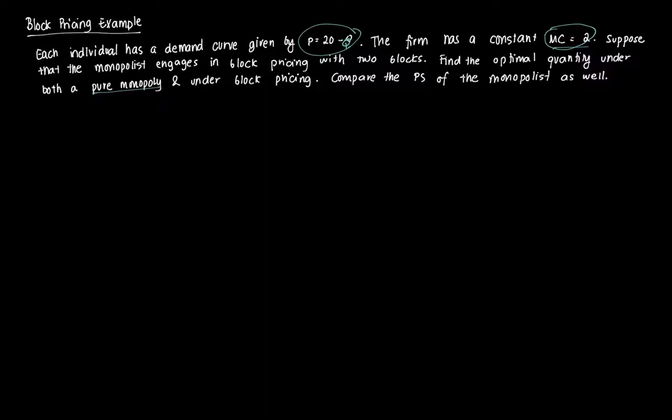Now suppose that the monopolist engages in block pricing wherein there are two blocks, so it's going to segment its market into two. We want to find the optimal quantity under a pure monopoly first, then under block pricing, and we're going to compare the two — including the producer surplus.